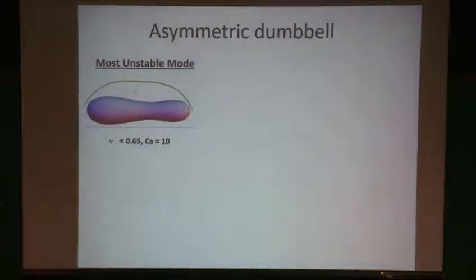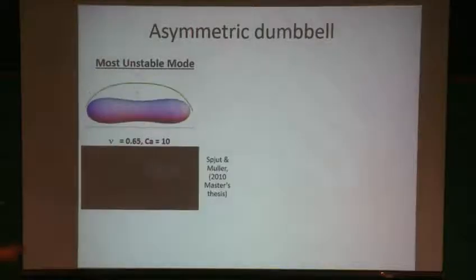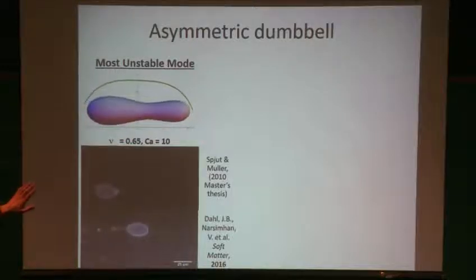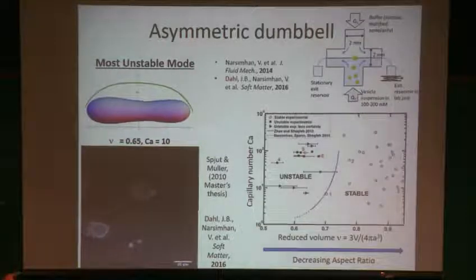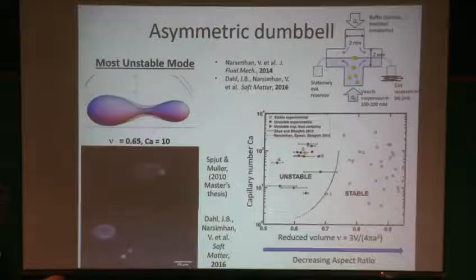Our simulations predict that moderately deflated vesicles will become linearly unstable to shape perturbations above a critical flow rate. The most unstable mode predicted by linear stability analysis looks very similar to experiments performed by Haas, put in Muller, as well as experiments we did in Susan Muller's lab. The theory lets us predict conditions under which this mode becomes unstable and generate a stability diagram: critical capillary number versus reduced volume, which captures what's observed in experiments reasonably well.